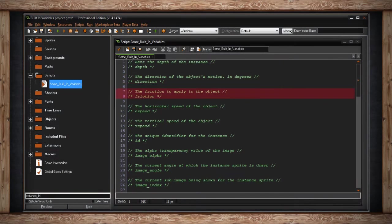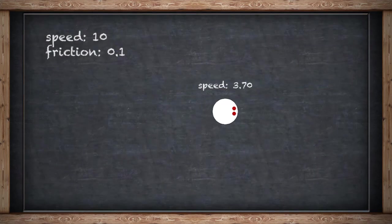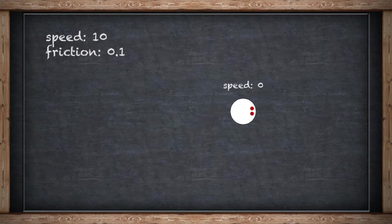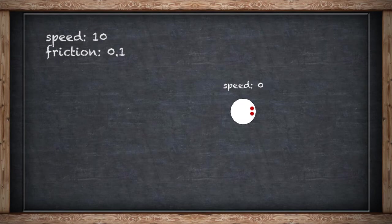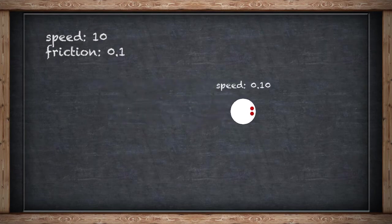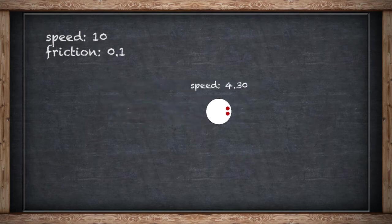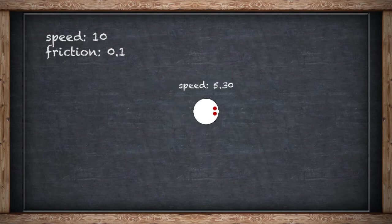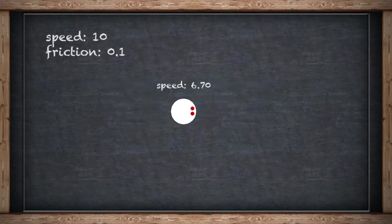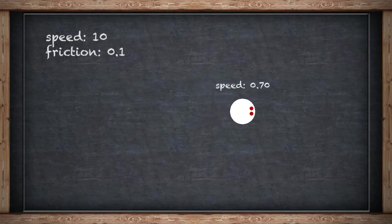Friction works in conjunction with the speed of an instance. Friction is a value that will be subtracted from the speed of your instance every single step until it's no longer moving or reaches zero speed. As an example, if your speed is 1 — moving one pixel per step — and your friction is 0.1, GameMaker will subtract 0.1 from your current speed every step, making it 0.9, 0.8, 0.7, until it reaches zero and you're no longer moving. This gives the illusion of friction.